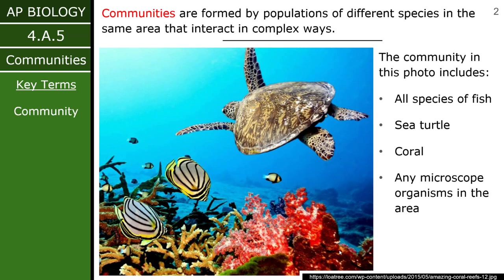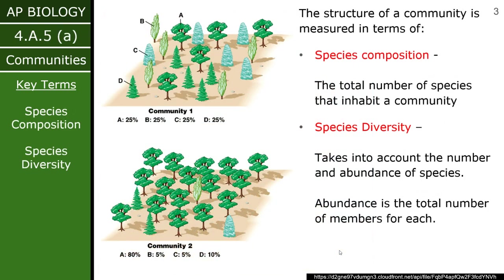It's not just going to be what you can see — it's also going to include any kind of microscopic organisms, which will generally be relevant as well. When we talk about communities, we can't just talk about how many individuals there are anymore. Now we have to talk about multiple species. So we have two major terms that we need to be able to describe.